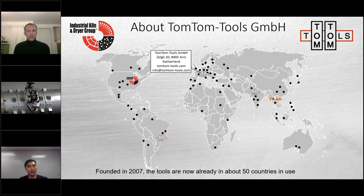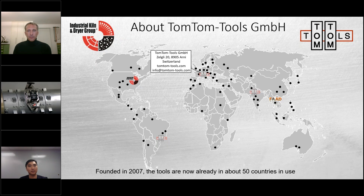TomTom Tools started in 2007. Industrial Kiln and Dryer is the North American exclusive distributor and partner for TomTom Tools. The tools are used in many countries — as shown on the map, the black dots represent where tools are in use. TomTom is still a small company based in Switzerland, and they work with local partners in India, Brazil, and Thailand.